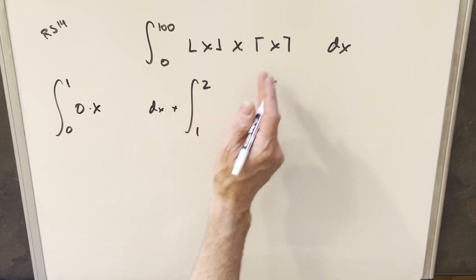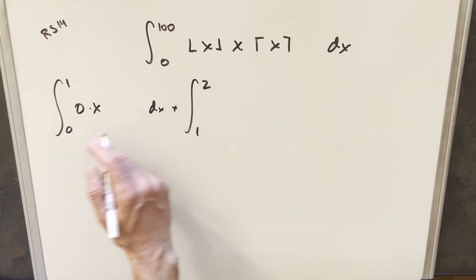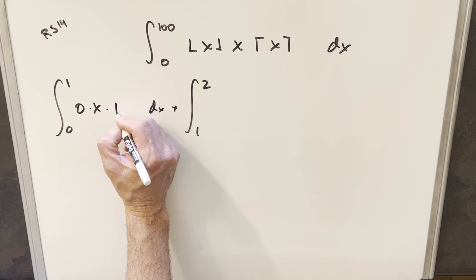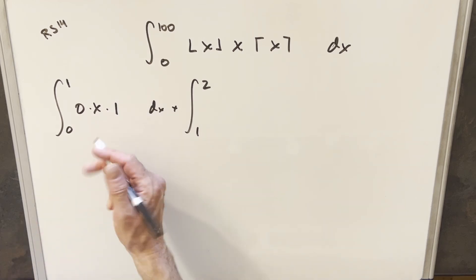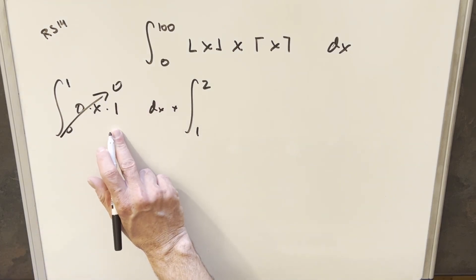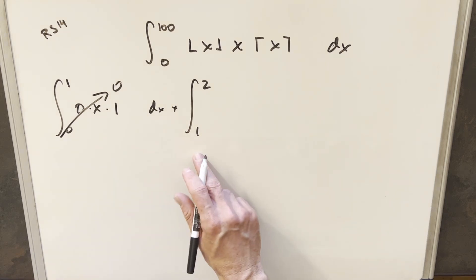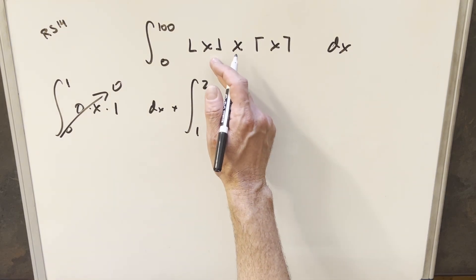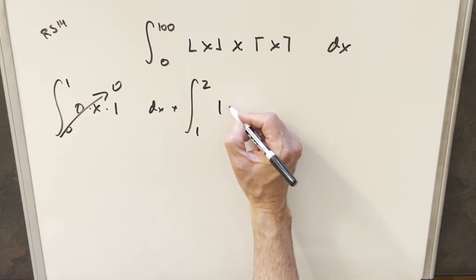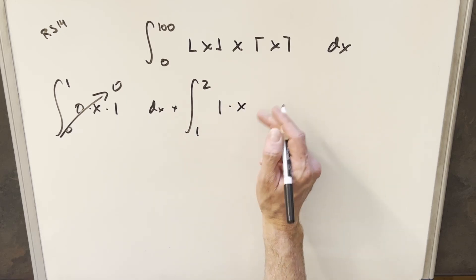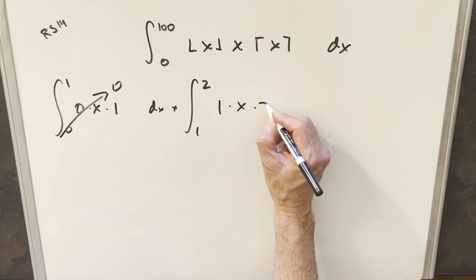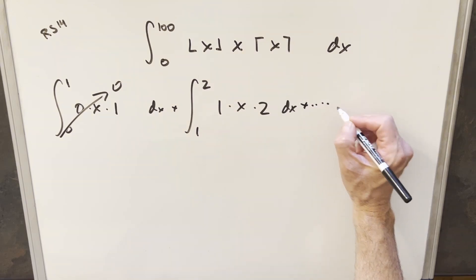x is just going to be x. The ceiling in the range between 0 and 1 is going to round us up to 1. But because we have the 0 from the floor here, this piece is all going to 0, so we don't have to worry about that first integral. For the second one, doing the same thing between 1 and 2, the floor function is going to take us down to 1, we're going to have our x, and the ceiling function is going to take us up to 2. This is going to go on and on like this.